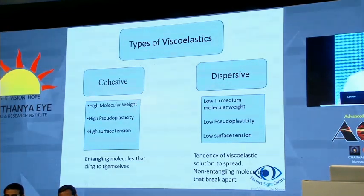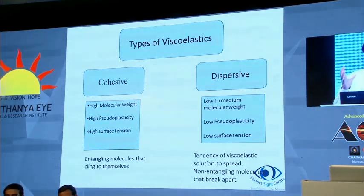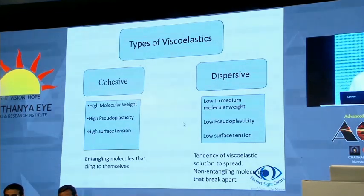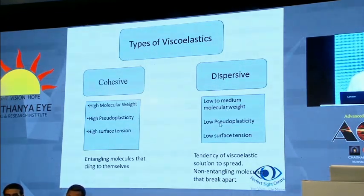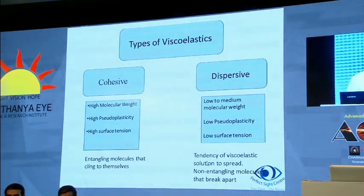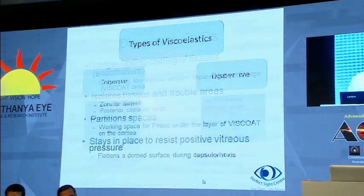If you remember physics from school, cohesive is a substance which sticks together, while adhesive sticks to another body. The other variety is dispersive — they have low to medium molecular weight, low pseudoplasticity, and low surface tension. The tendency of dispersive viscoelastic solutions is to spread, because they have non-entangling molecules that break apart.